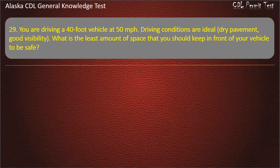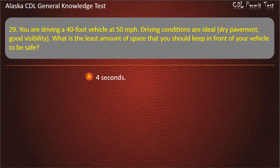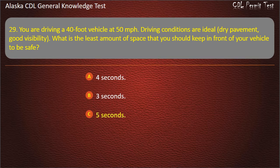Question 29. You are driving a 40-foot vehicle at 50 miles per hour. Driving conditions are ideal — dry pavement, good visibility. What is the least amount of space you should keep in front of your vehicle to be safe? 4 seconds, 3 seconds, or 5 seconds. Answer: 5 seconds.